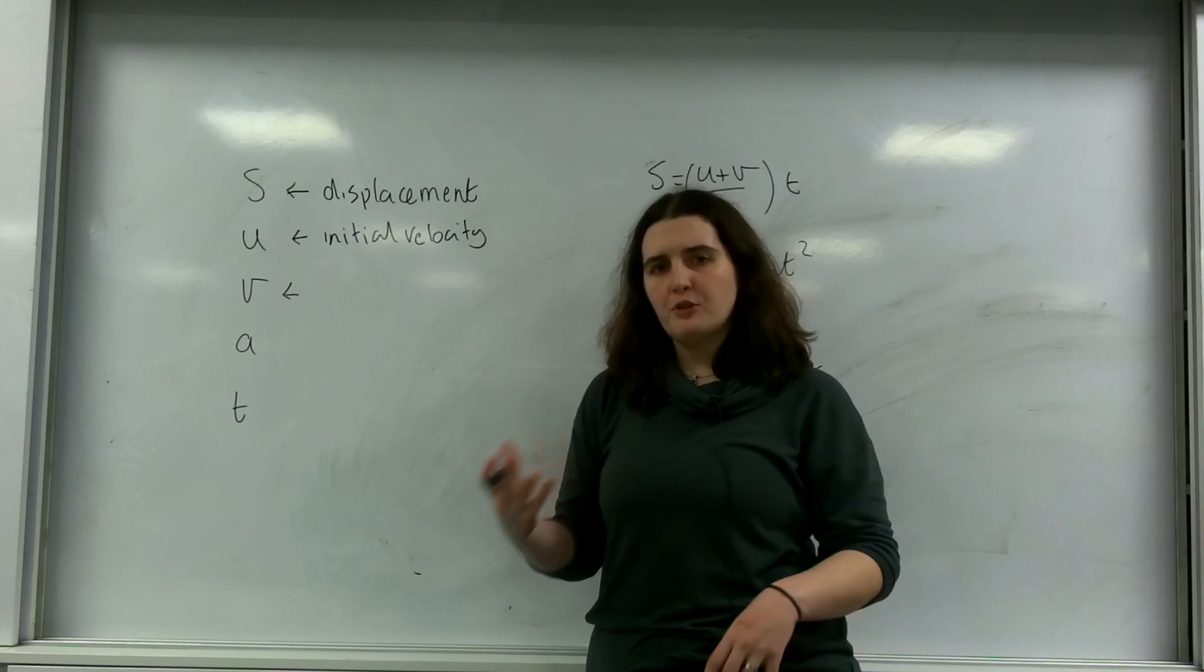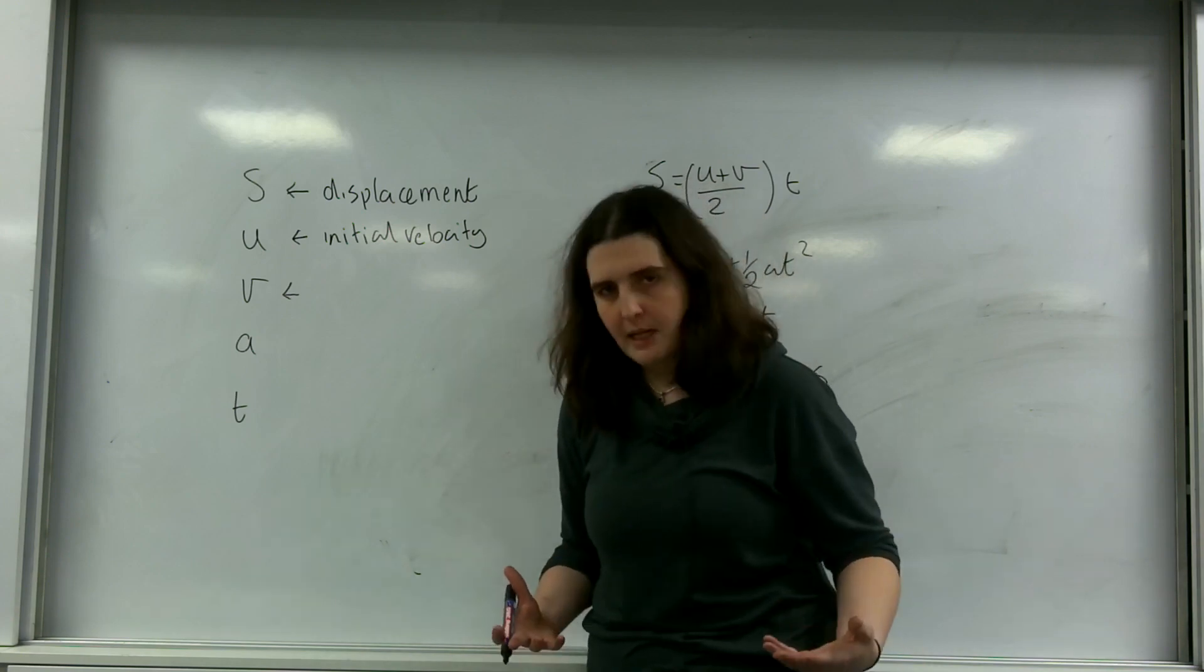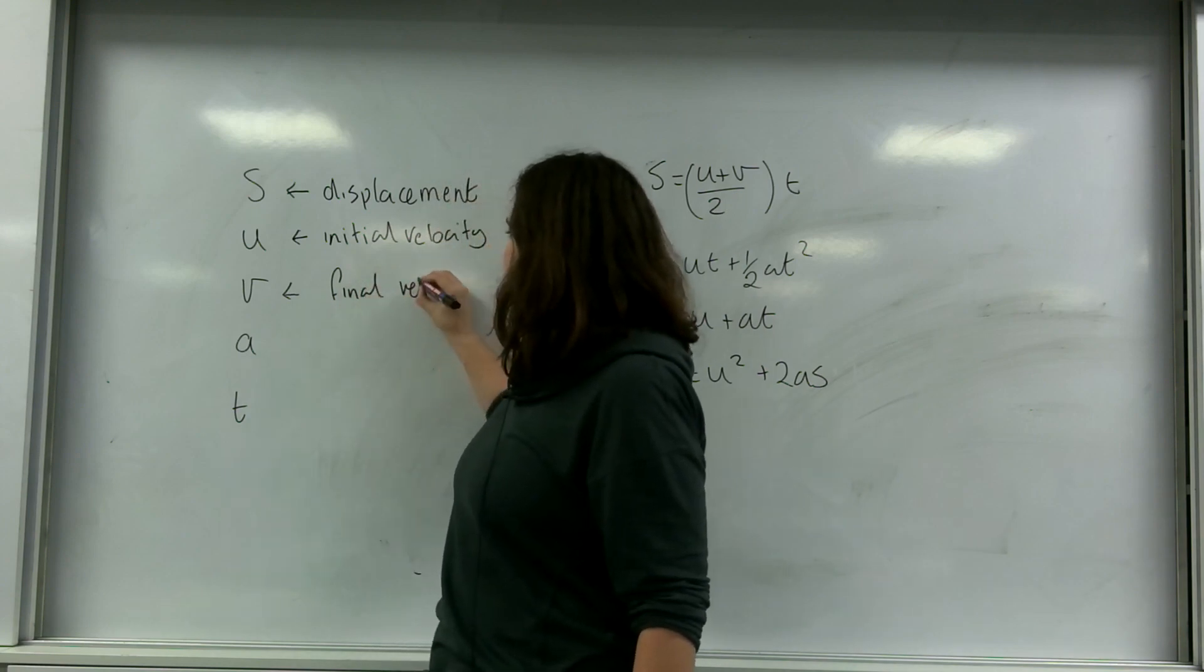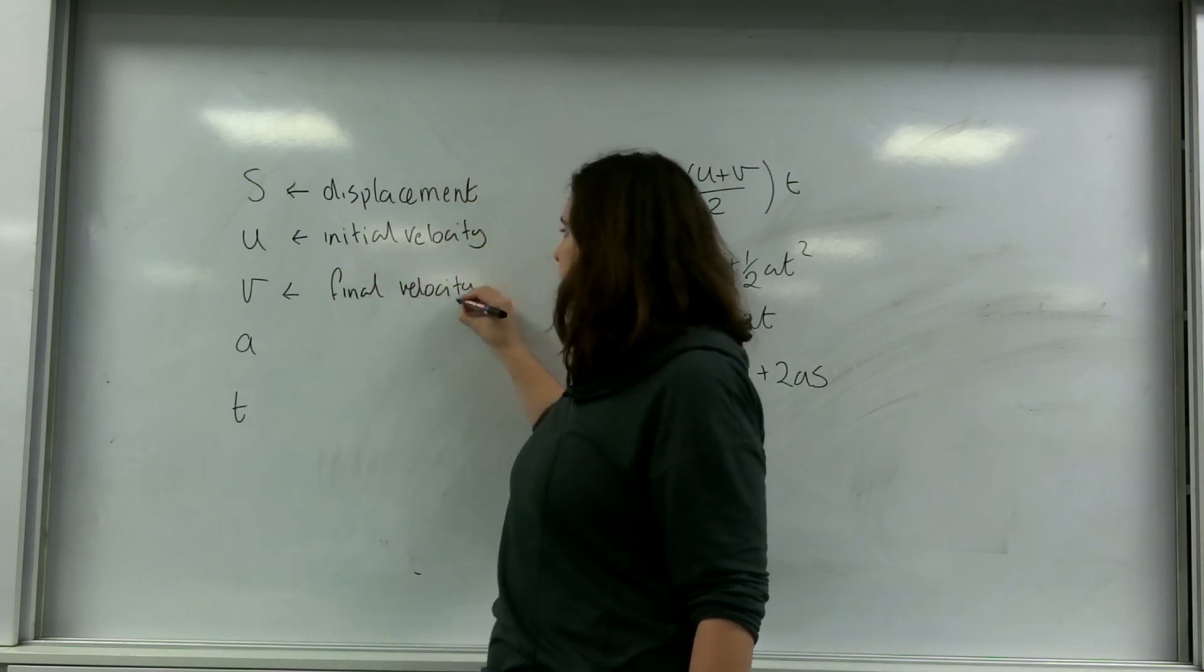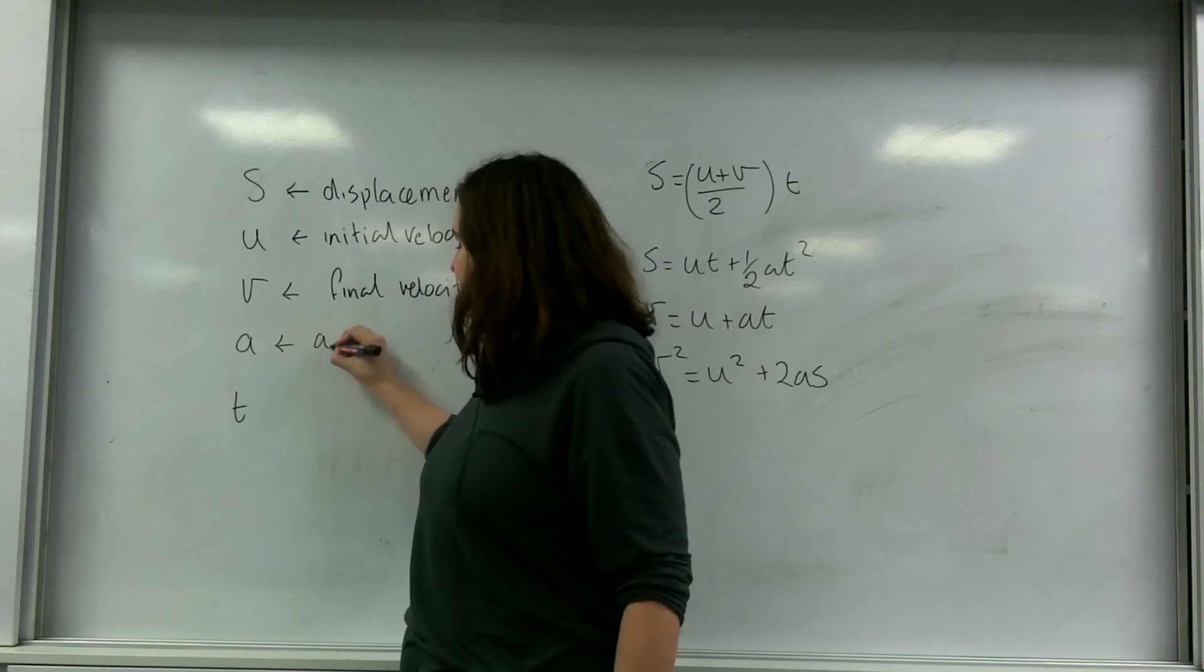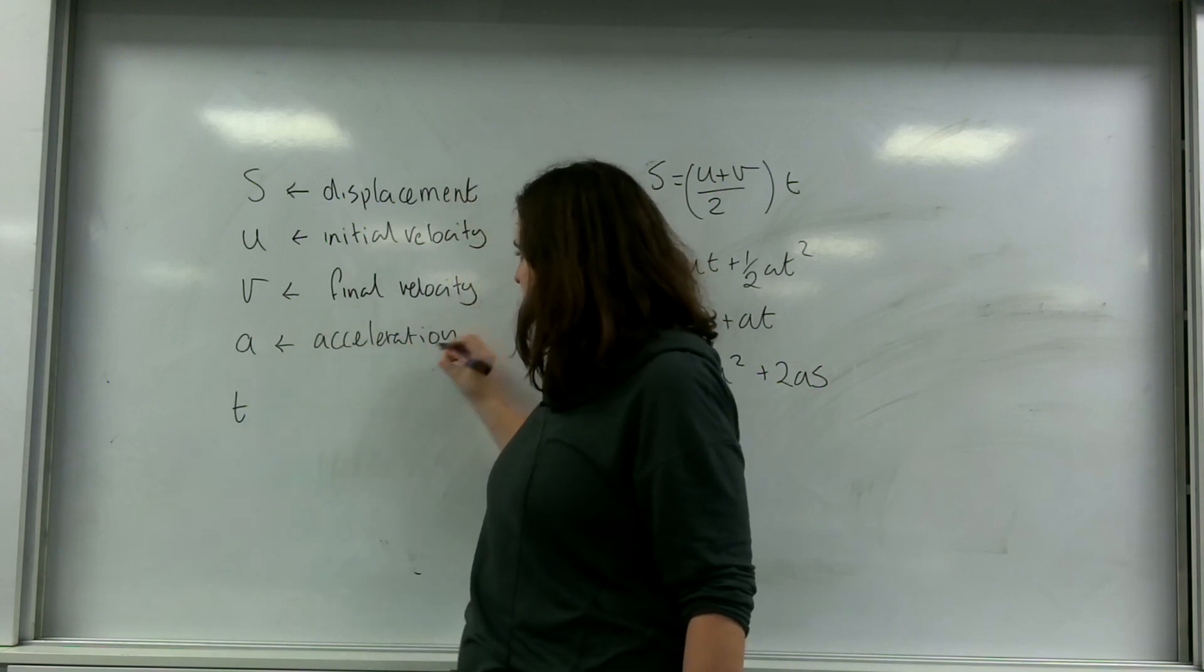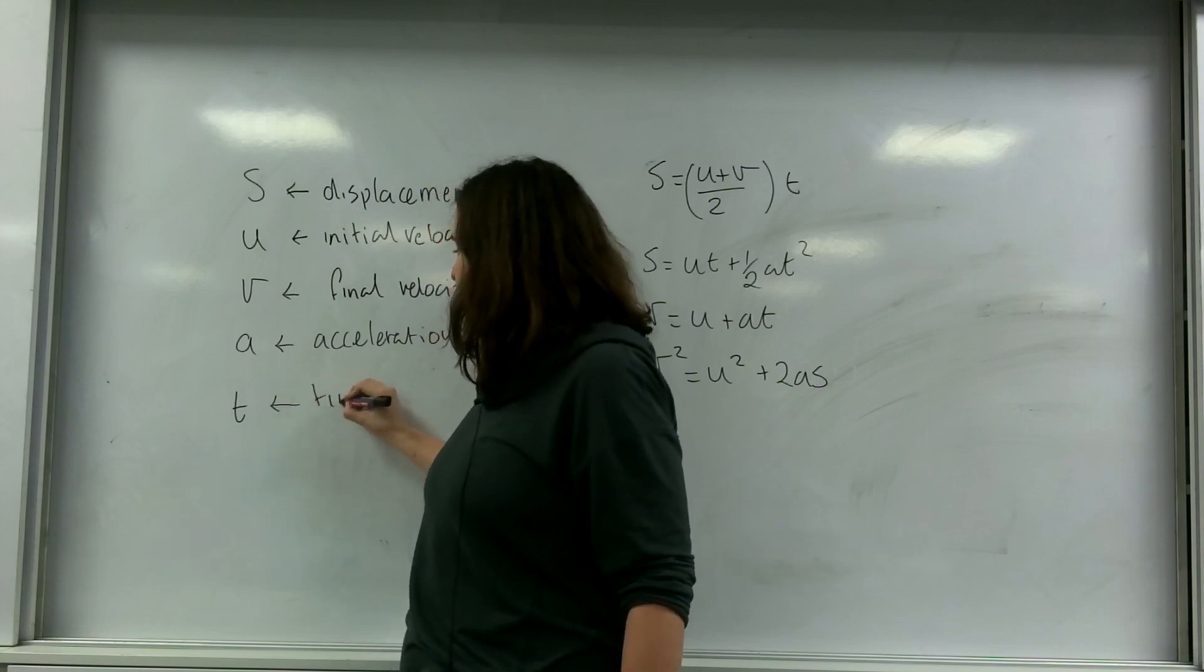Sometimes you will have velocity and volume in the same formula and you don't want to get the V's mixed up. This here is the final velocity. A is acceleration, and T is time.